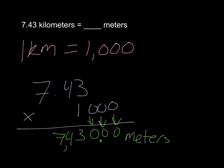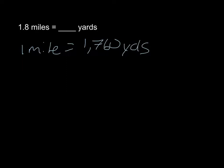Let's look at the next problem. 1 and 8 tenths of a mile is the same as how many yards. Looking at my chart, I see that 1 mile is the same as 1,760 yards. So I can set up my multiplication problem: 1,760 times 1 and 8 tenths.